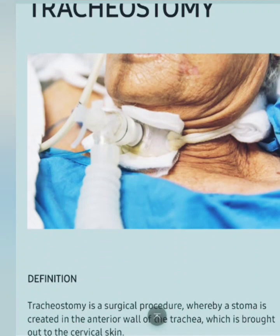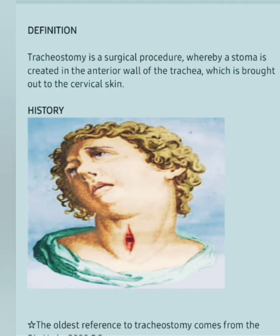Welcome to our next topic: tracheostomy. First we will see the definition of tracheostomy. Tracheostomy is a surgical procedure whereby a stoma is created in the anterior wall of the trachea, which is brought out to the cervical skin.